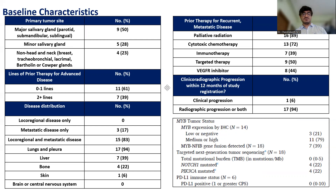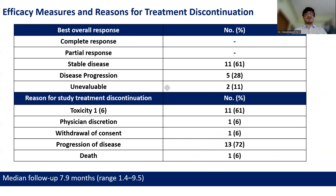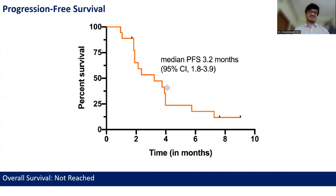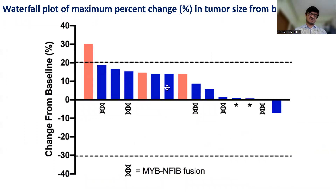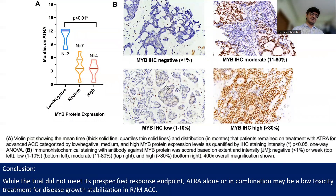Adenoid cystic carcinoma is an area not sensitive to immunotherapy because they have low PD-L1, low CPS, and low tumor mutation burden. They are a driver mutation-mediated disease via translocation 6-9. Looking at responses, there were no responses in this trial — disease stabilization in nearly 60% of patients and progression-free survival of 3.2 months. Only one patient remained on treatment on follow-up. In patients with low MYBL1 expression, progression-free survival was better with ATRA in this setting.